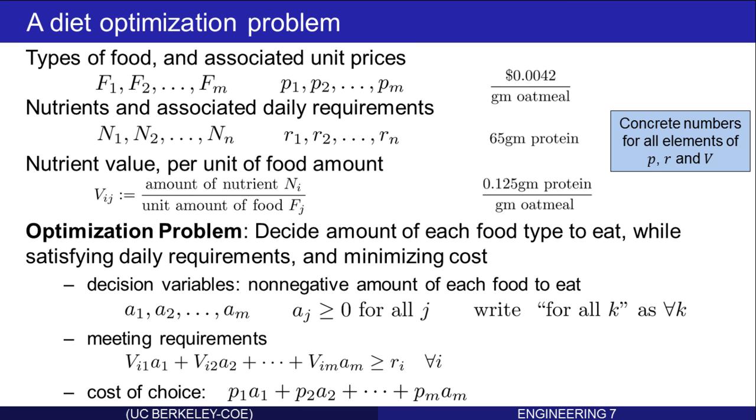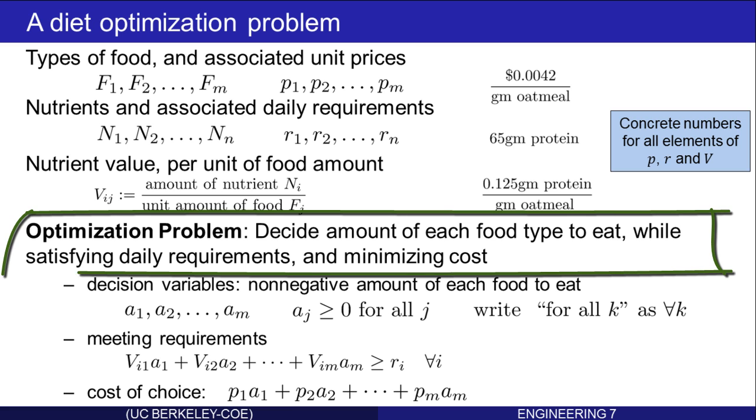So that is the diet optimization problem. Decide the amount of each food to eat, while satisfying the daily requirements, but minimizing the cost.